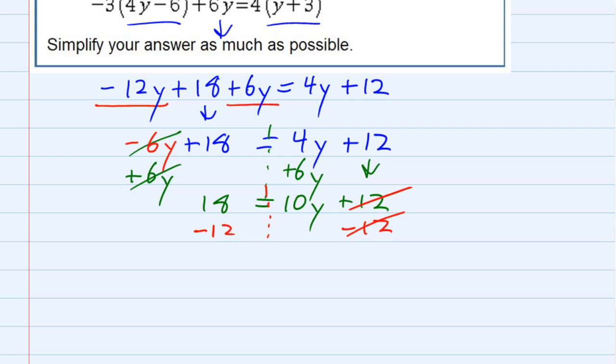On the right-hand side, that gives me now just the 10y. We're almost there, trying to get the y by itself. On the left-hand side, that gives me a 6. And, from here, I can divide both sides by 10 to get the y by itself.